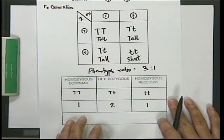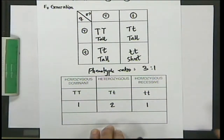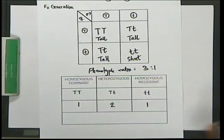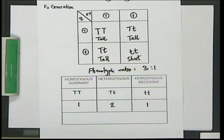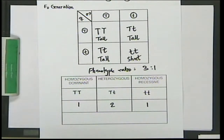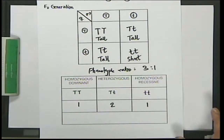When Mendel actually grew those plants, out of 1,064 plants he counted 787 tall and 277 short. If you express that as a ratio, it comes to approximately 2.84:1 — almost exactly 3:1. So reality closely matches the prediction. That's what the monohybrid cross demonstrates.